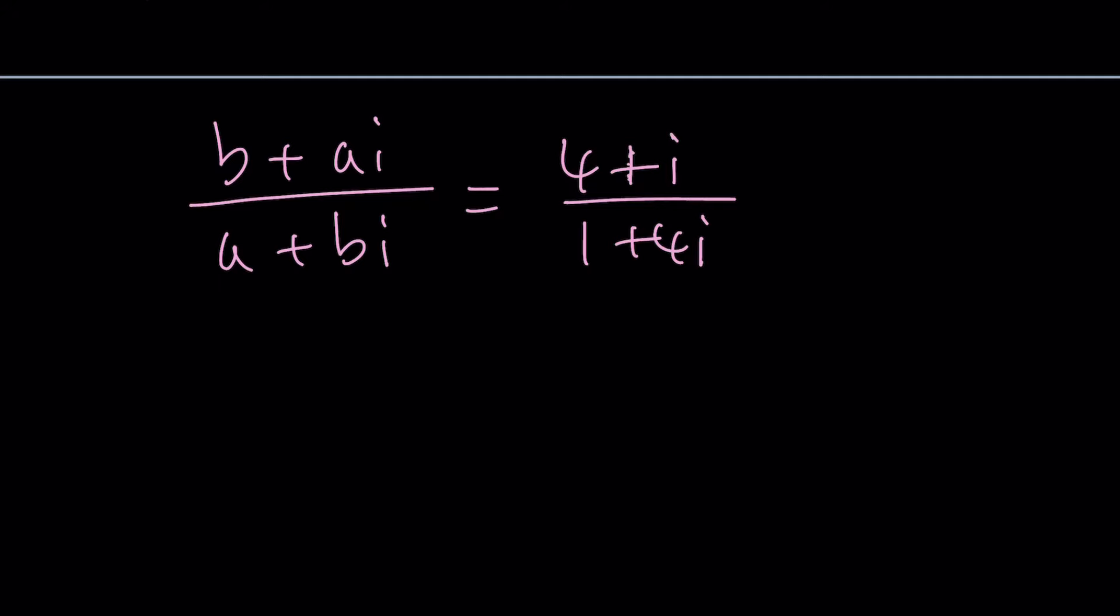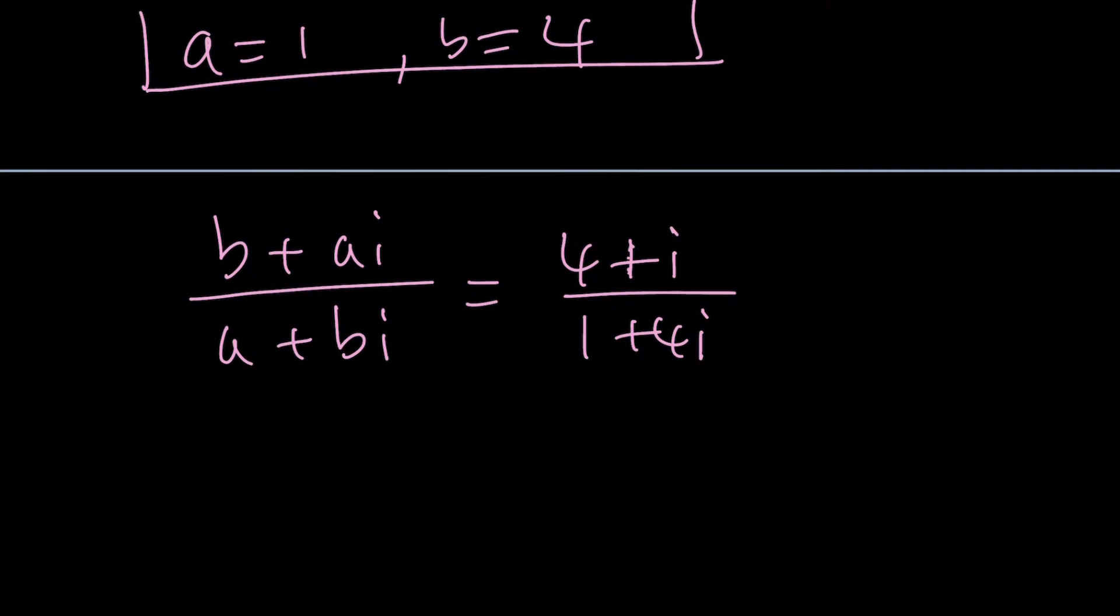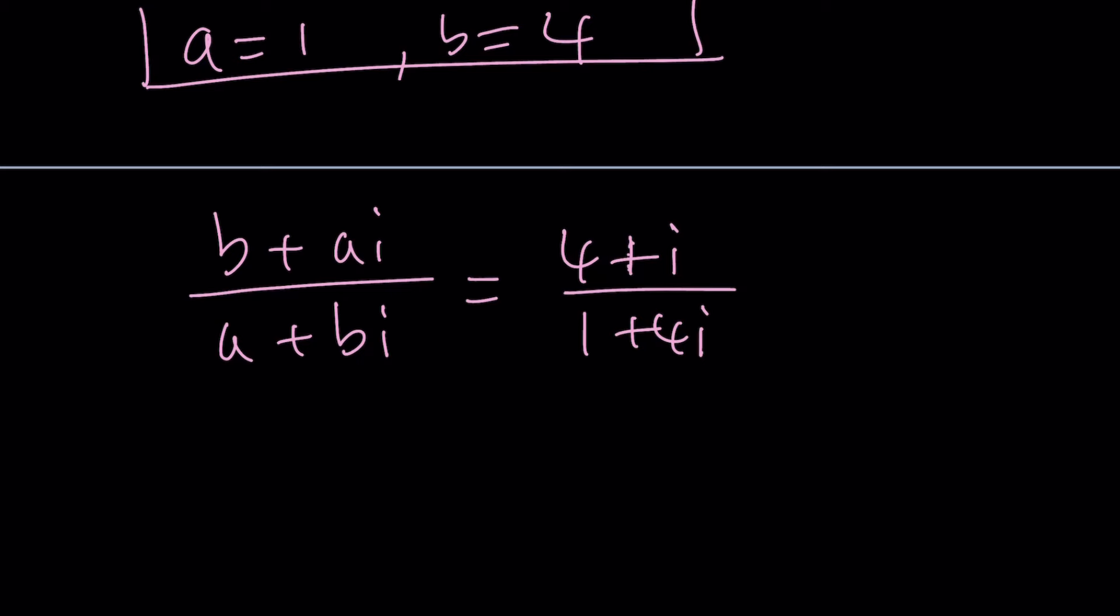Notice that if A equals 1 and B equals 4 works, then I can multiply these numbers by something. So for example, A can be expressed as K and then B would be 4K in this case because remember B was 4 times A.